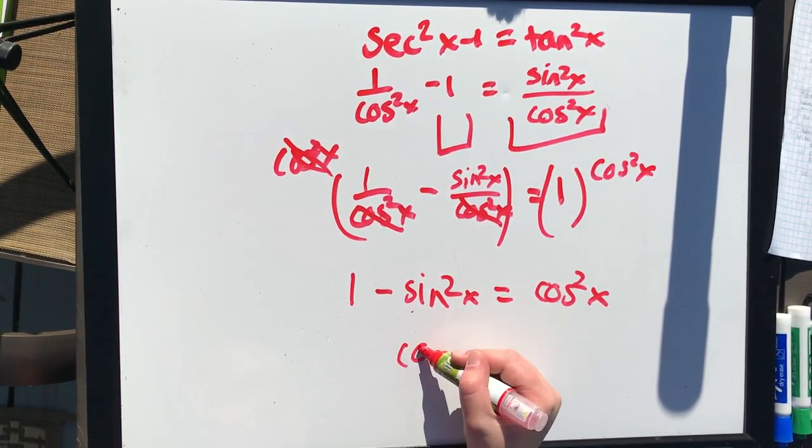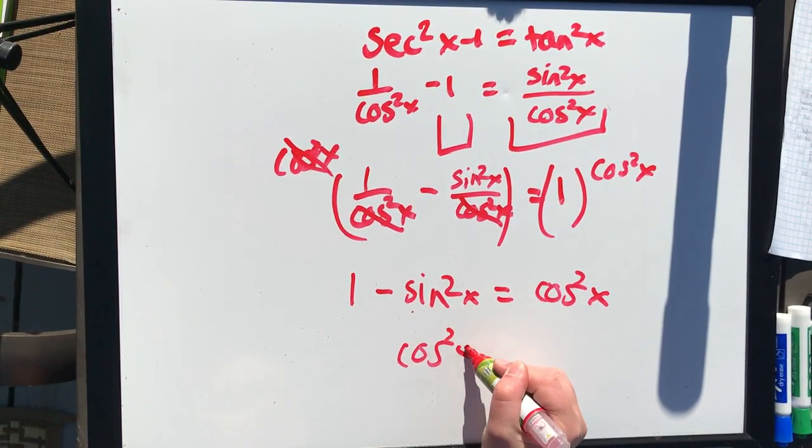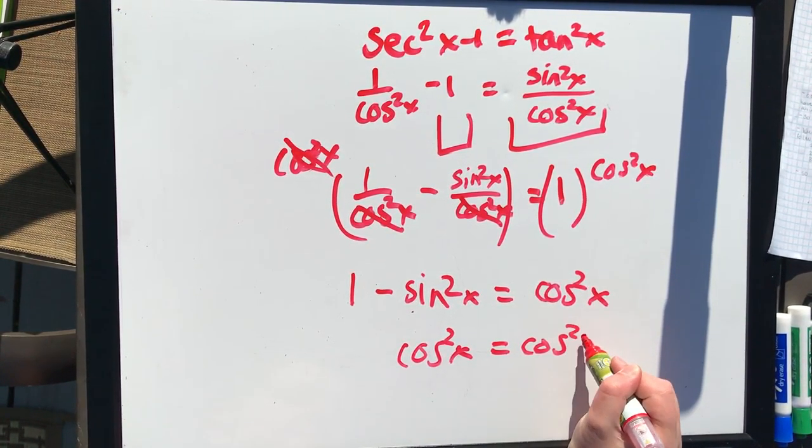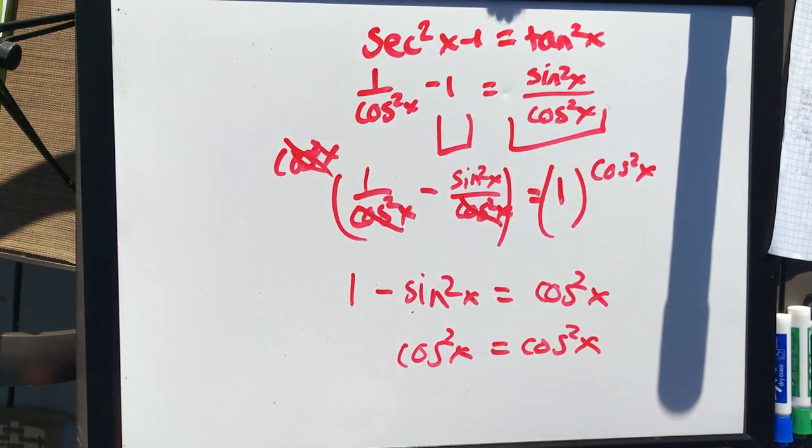This is also an identity — cosine squared x equals cosine squared x. Verified.